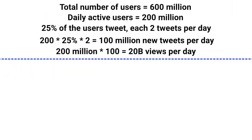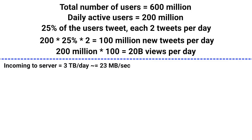From the earlier storage calculation, we know that 2 TB of data will be coming into our server per day. When we convert it to MB per second, the incoming data to the server will be nearly 23 MB per second. The calculation: 2 × 1000 × 1000 (converting TB to MB) ÷ 86400 (converting day to seconds) ≈ 23 MB per second incoming data to the server.